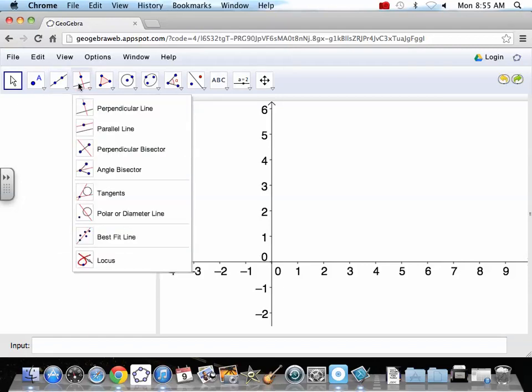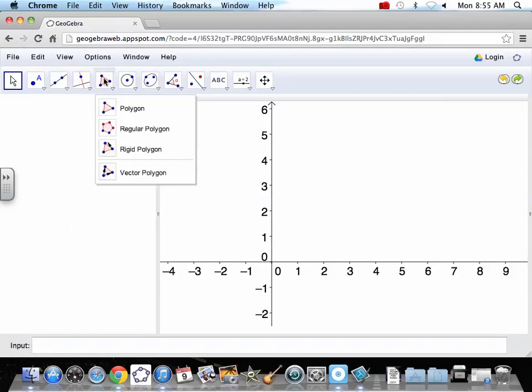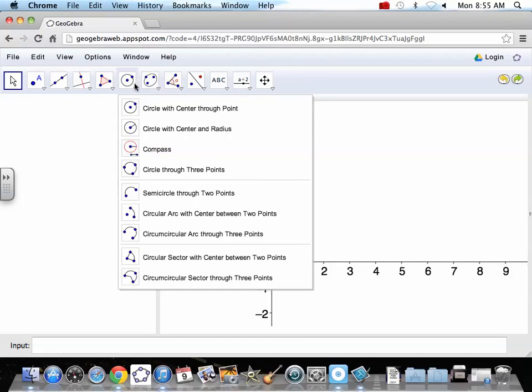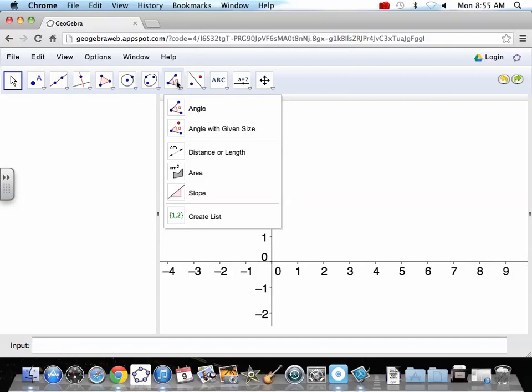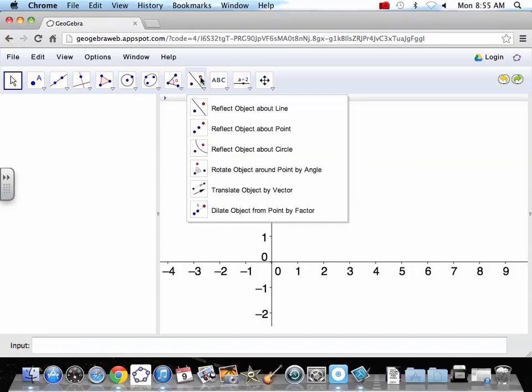Parallel perpendiculars. Polygons - regular polygon, try not to make a regular polygon, just make a polygon. Circle tools, different ways to make circles. Ellipses. Angles you can make or measure. Measuring distance, measuring area, measuring slope. And then our transformation tools.